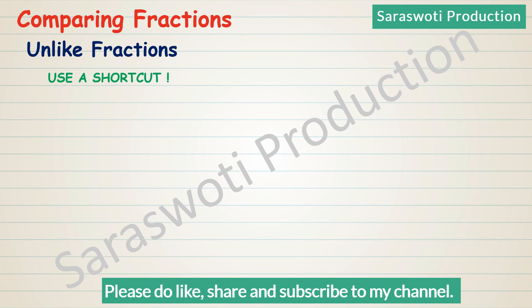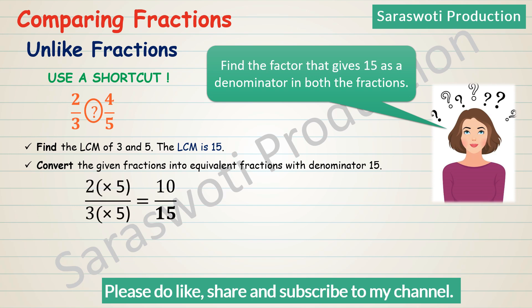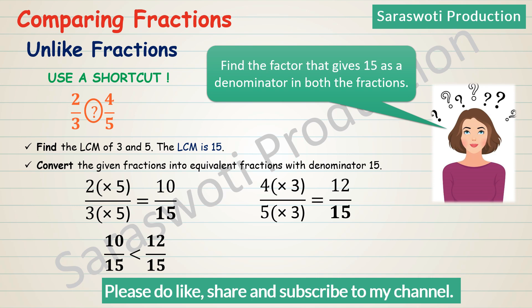Using a shortcut method — is there a shorter way? Yes. Given 2/3 and 4/5: step 1, find the LCM of 3 and 5, which is 15. Step 2, convert the given fractions into equivalent fractions with denominator 15. For 2/3: 2×5 over 3×5 equals 10/15. For 4/5: 4×3 over 5×3 equals 12/15. Thus, 10/15 < 12/15, so 2/3 < 4/5.